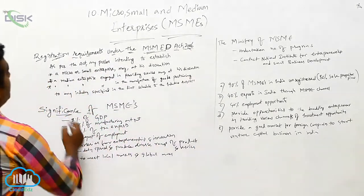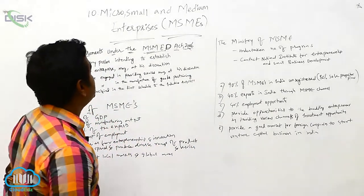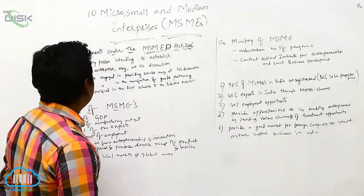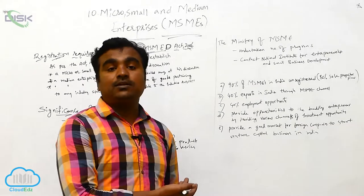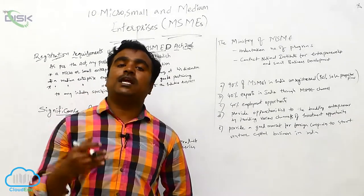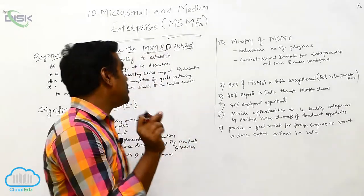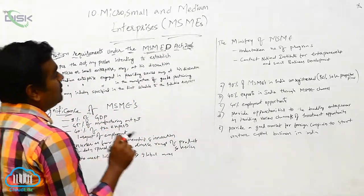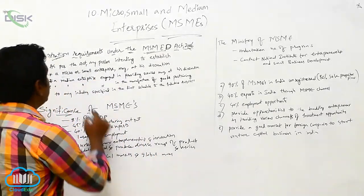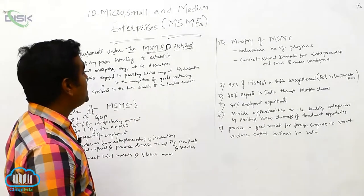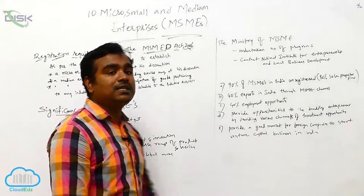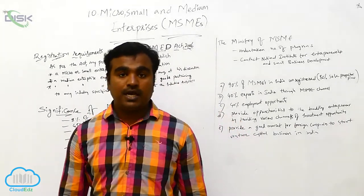According to this act, a micro or small enterprise classification is based on discretion — that is, according to the level of investment, it is classified. It may be micro or small enterprises. A medium enterprise engaged in providing services may also be classified as a medium enterprise based on its discretion.